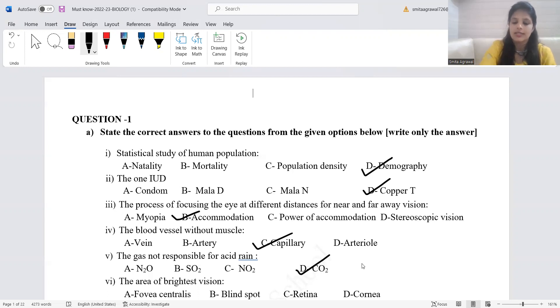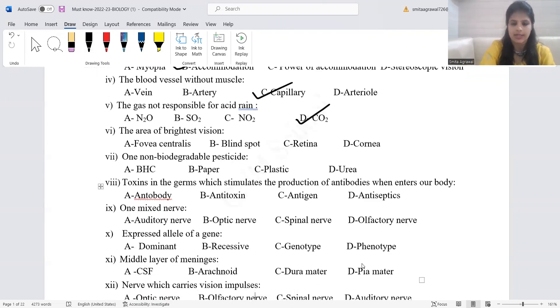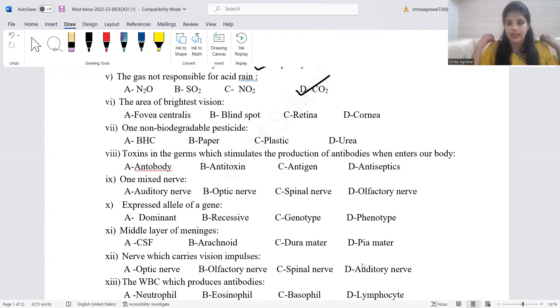The gas not responsible for acid rain, the correct answer is carbon dioxide. Carbon dioxide is a weak acid, it will not cause acid rain. The area of brightest vision is fovea centralis. This is also called yellow spot. Its location is important. It is present on the center of retina just at the axis of pupil. Blind spot is a place where no image is formed. Retina is the photographic plate of eye where the image is formed. Non-biodegradable pesticide. Question is non-biodegradable, so urea and paper are eliminated. Remaining are BHC and plastic. The question is pesticide, so plastic is not a pesticide. BHC, that is benzene hexachloride, is a pesticide.